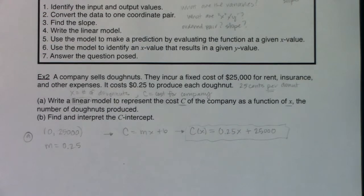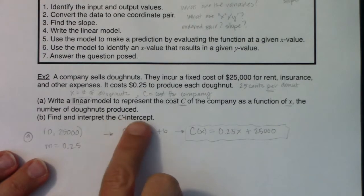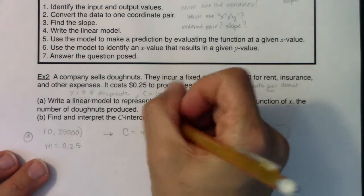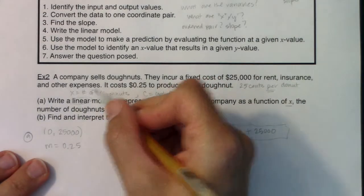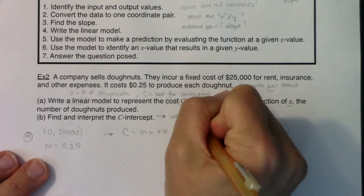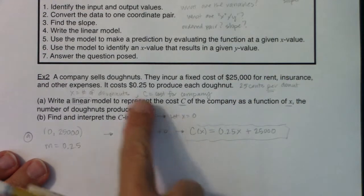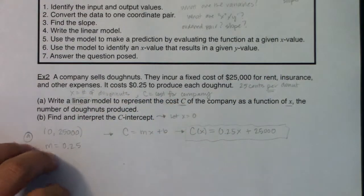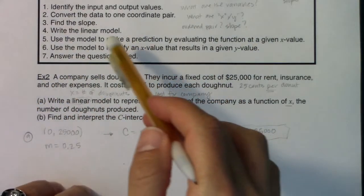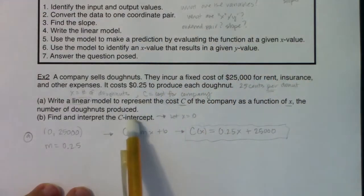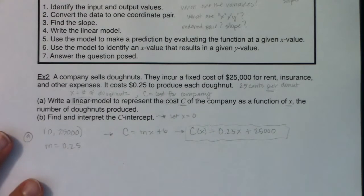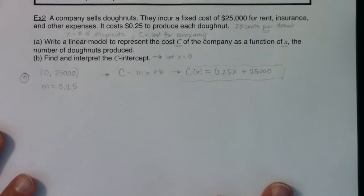Now part b says find and interpret the C-intercept. And maybe some of you can already spot the C-intercept right out the gate. That's fantastic. And if you can't, I just want to take a little refresher, a little trip down memory lane to talk about how you could find any kind of intercept. If you want to find a C-intercept, you let the opposite letter zero out, and our opposite letter here is x. So I would let x be equal to 0. If you ever wanted to find the x-intercept, you would let C equal 0. So if you remember, when we find intercepts, we let the opposite letter zero out. So here they wanted the C-intercept, so I will let x equal 0.